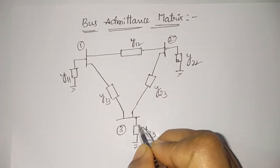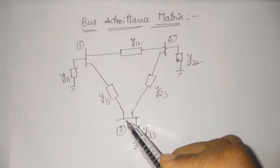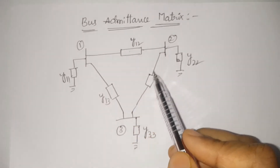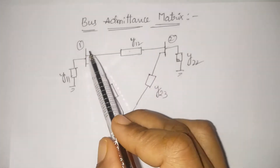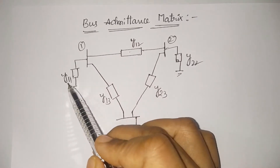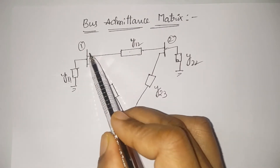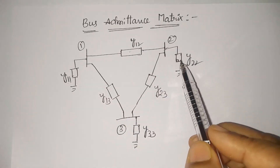For that purpose, here I have considered a simple network having three buses: one, two, and three, as you can see. These are the corresponding branch admittances. Y12 is the admittance of the branch connecting bus 1 and bus 2, and y11 is a branch admittance connecting bus 1 to ground. Similarly for the rest of the elements.